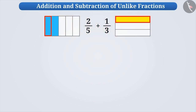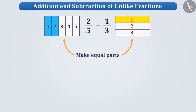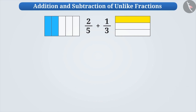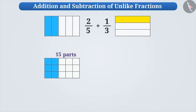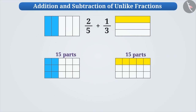If we make the number of parts equal, then the size of the parts get equal automatically. So let's make the number of parts equal. If we divide each of these five parts into three parts, then the total number of parts will be fifteen. Similarly, if we divide these three parts into five parts, then we get fifteen. Now both rectangles are divided into fifteen equal parts.